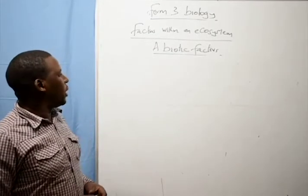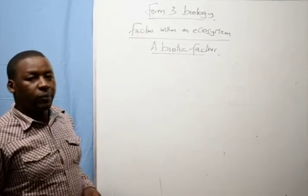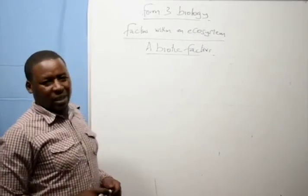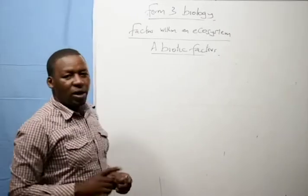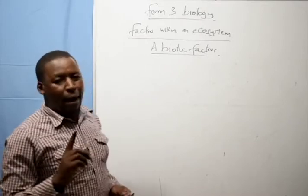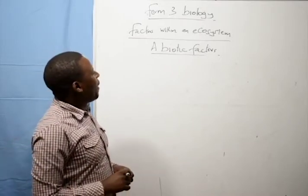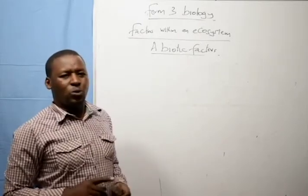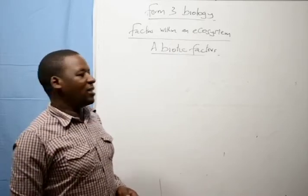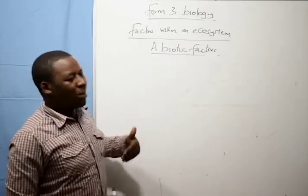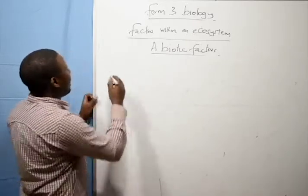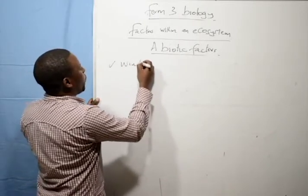Welcome students to our lesson for today. We are going to discuss abiotic factors. Within an ecosystem there are two kinds of factors: we have biotic factors and we have abiotic factors. Now, biotic factors are those factors that are caused by interaction between organisms. Then abiotic factors, these are factors that are caused by the environment or they are known as environmental factors.